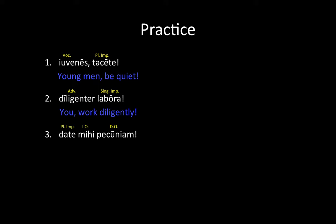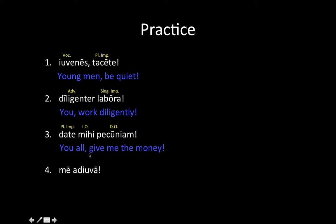'Date mihi pecuniam.' 'Date' is a plural imperative — if we switched the -t to an -r, we'd have 'dare,' meaning 'to give.' 'Mihi,' according to our pronoun charts, is the indirect object — 'to or for me.' 'Pecuniam' is accusative singular, so it's our direct object. Translation: 'You all, give me the money.' Next: 'Me adiuva.' 'Me' is the direct object form of 'me,' a first-person personal pronoun. 'Adiuva' is a singular imperative, so we're commanding one person to help. Translation: 'You, help me.'